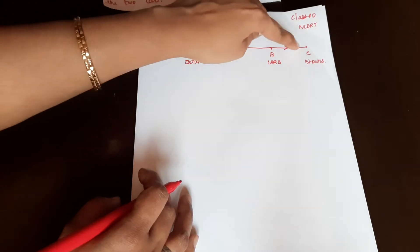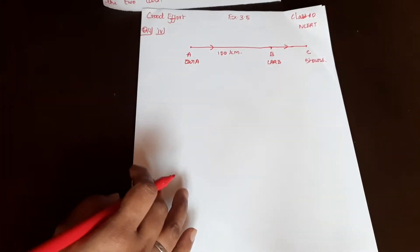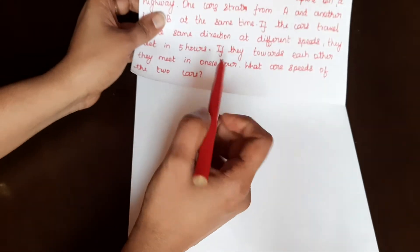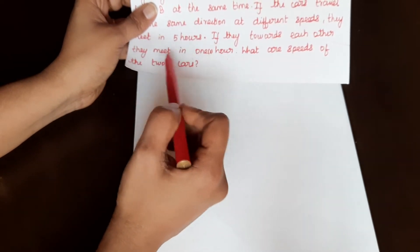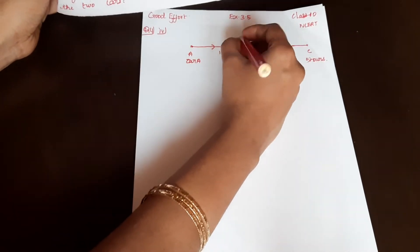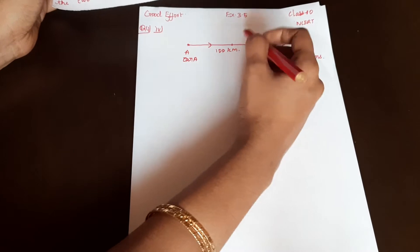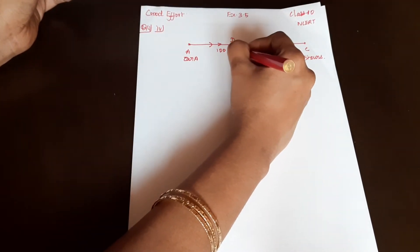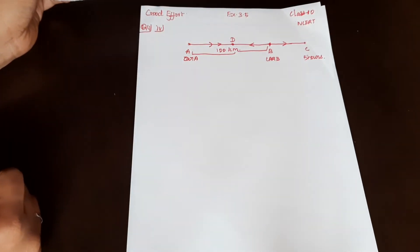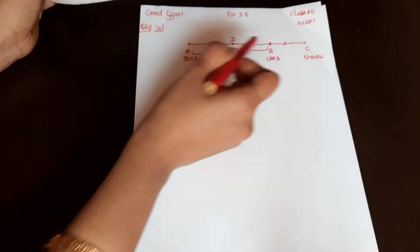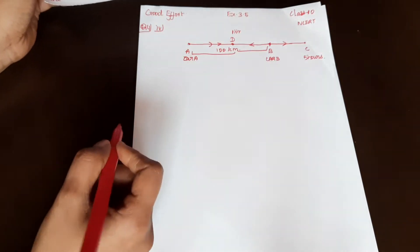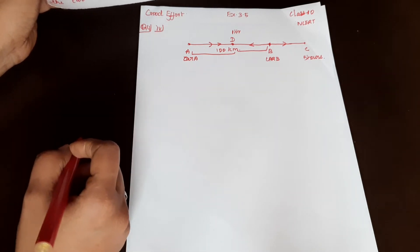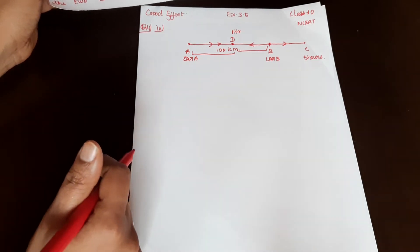Case 1: Same direction, same time, different speed. Case 2: Car A and Car B travel towards each other — opposite direction — and they meet in 1 hour. We need two cases to generate two equations.